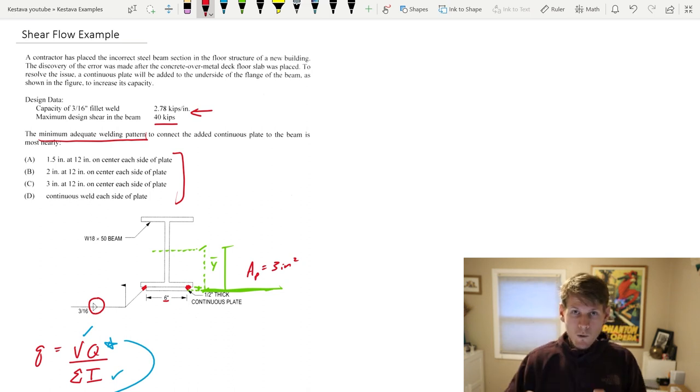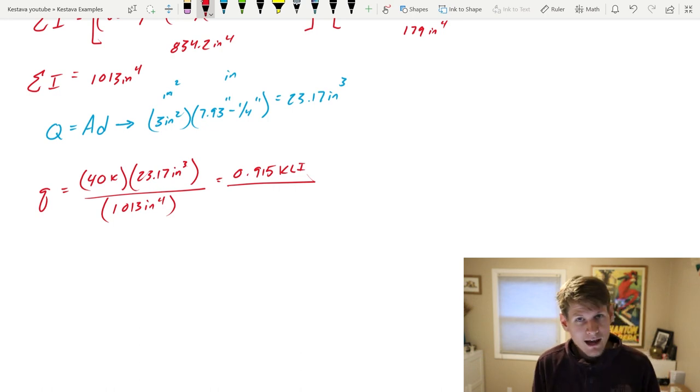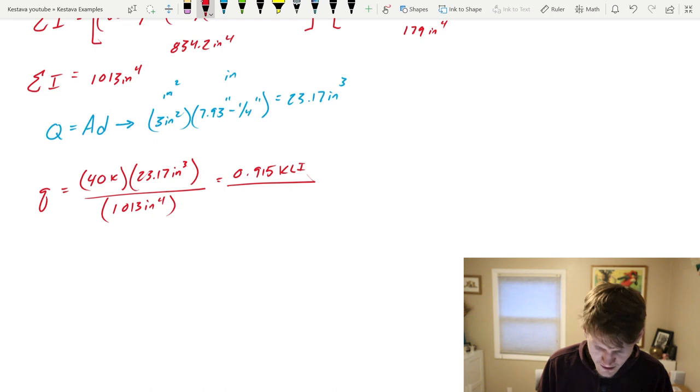It asks for the minimum adequate weld pattern to connect the continuous plate to the wide flange. They give us options of lengths of weld on a 12 inch on center spacing. You can see based on the symbol here they are welding each side, so they're going to weld that part and that part. So we have two lines of weld connecting the plate to the wide flange so we need to consider that.